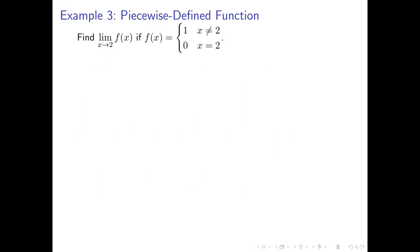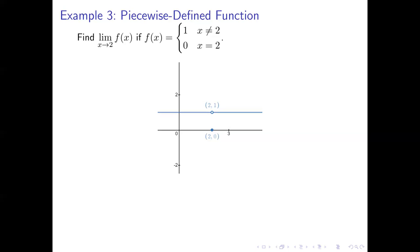Here's a third example involving a piecewise defined function. We're going to find the limit as x approaches 2 of f of x, where f of x equals 1 if x is not equal to 2, and 0 if x equals 2. The graph is basically a horizontal line — essentially y equals 1 — except at x equals 2, where the function jumps down to the point (2, 0). There's an open circle at (2, 1) and a closed circle at (2, 0). When finding the limit as x approaches 2, we don't care what f of 2 is — ignore the fact that f of 2 equals 0.